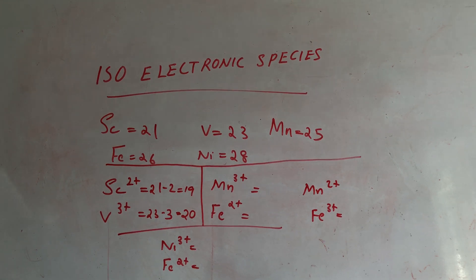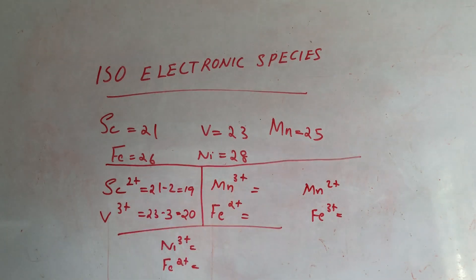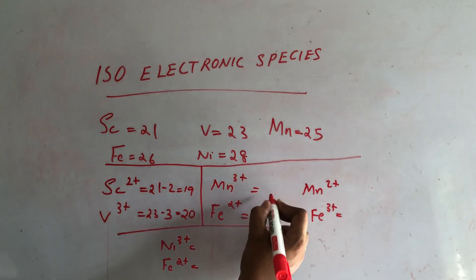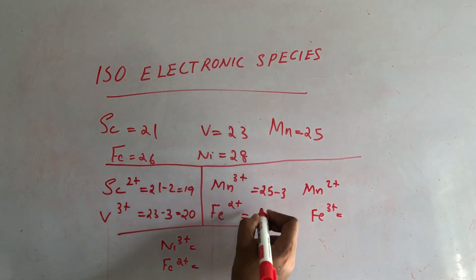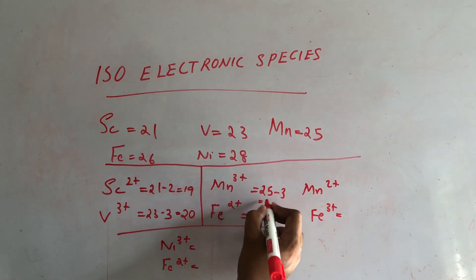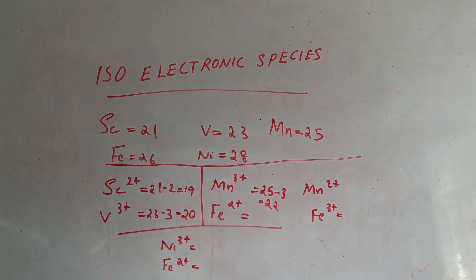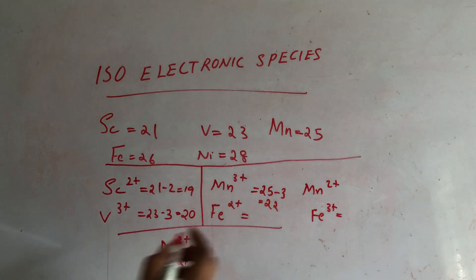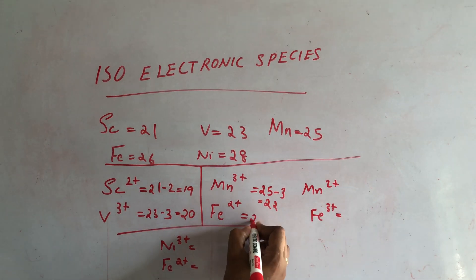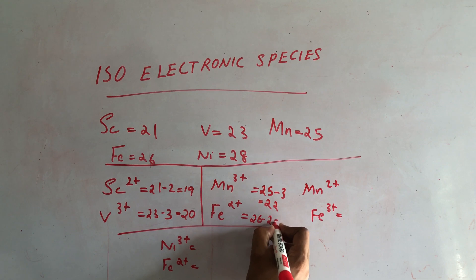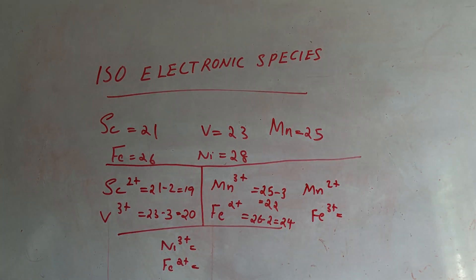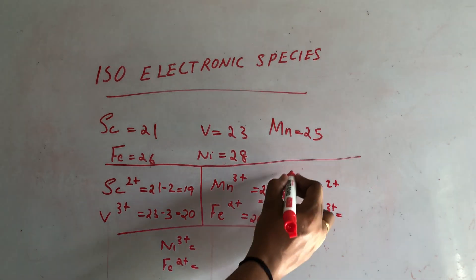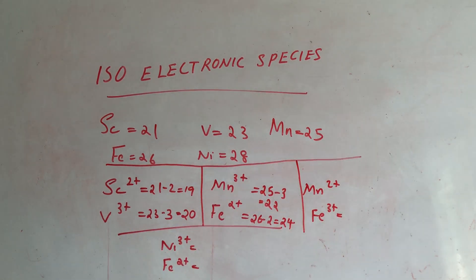Mn3+ — Manganese has atomic number 25, so 25 minus 3 equals 22 electrons. Fe2+ — Iron has atomic number 26, so 26 minus 2 equals 24 electrons. These are not isoelectronic because the number of electrons is different.